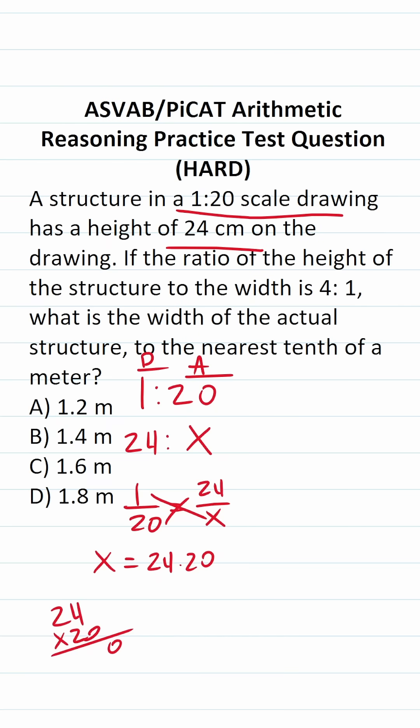4 times 0 is 0. 2 times 0 is 0. Before we start multiplication with this 2, bring in a 0. 4 times 2 is 8. 2 times 2 is 4. We can see that this is 480. So x equals 480. We know the actual size of the structure is going to have a height of 480 centimeters.